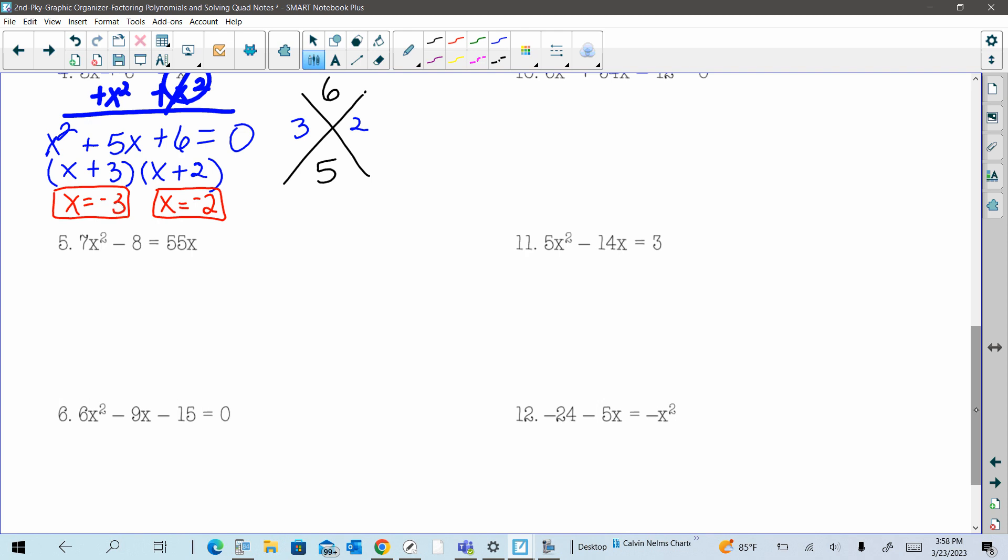So on number five here, because we have it equal to 55x, we have to first subtract, do the opposite, this 55x. This now becomes my zero over here. So I'm just going to put it in standard form. Seven x squared minus 55x minus eight equals zero.